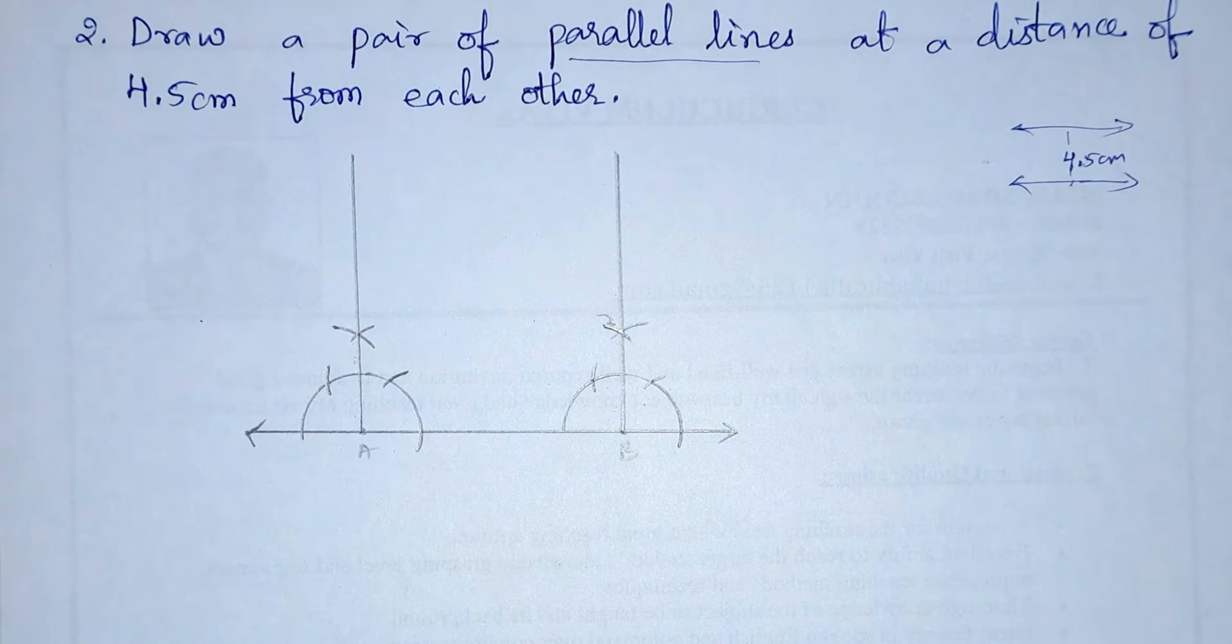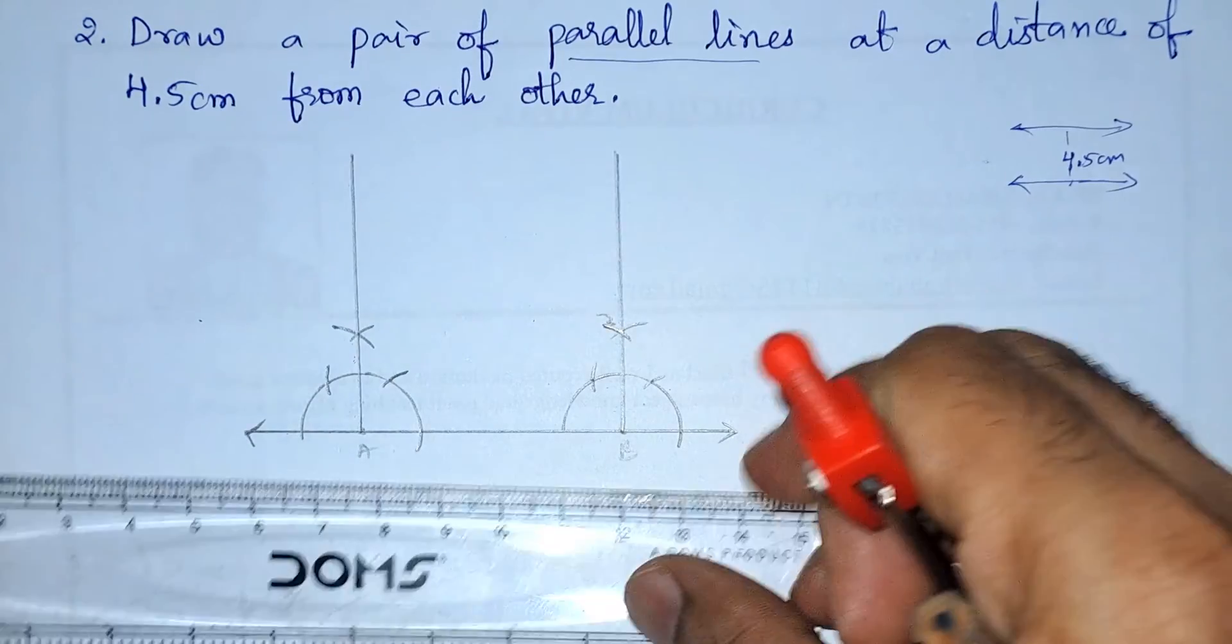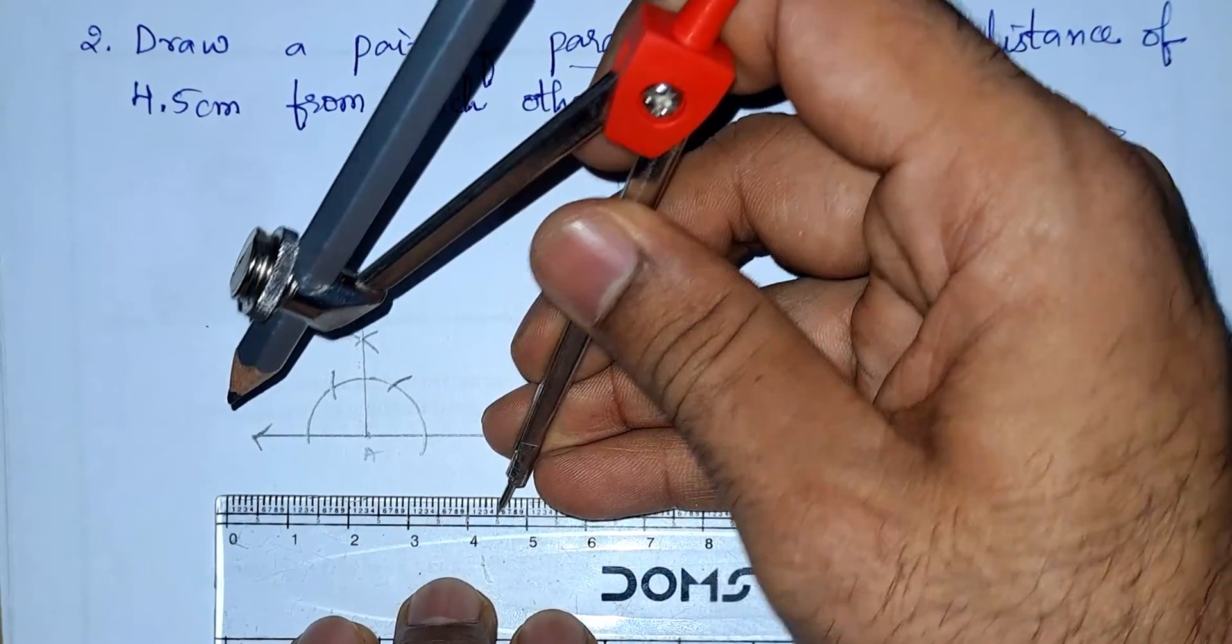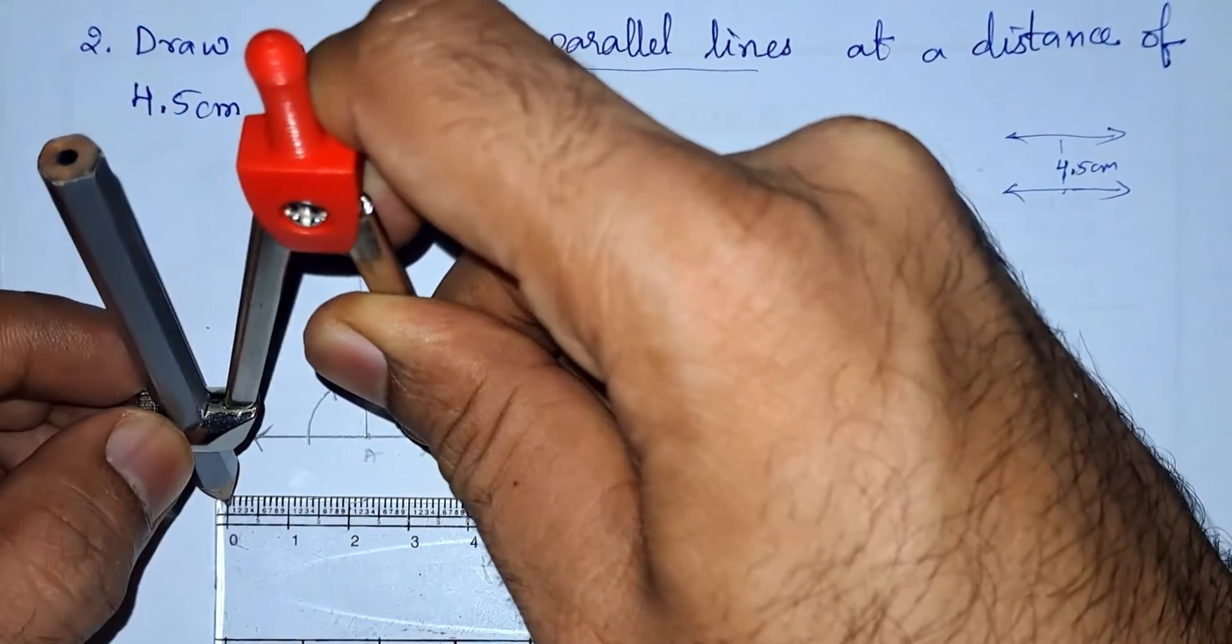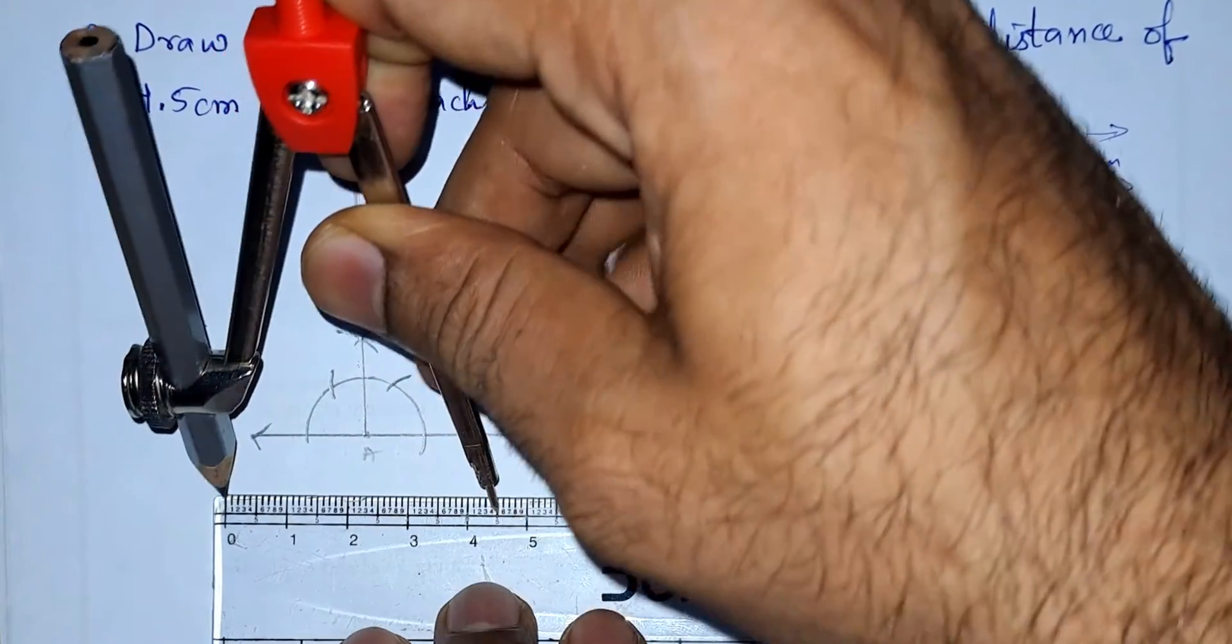We got two lines and they said that the distance should be 4.5 centimeters. Now let us take the 4.5 centimeters. So here we are having 4.5 centimeters. From this we will take the pencil, mark at zero to 4.5 centimeters, we got it.